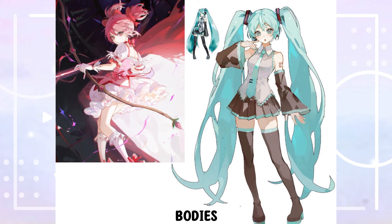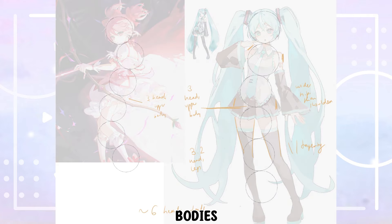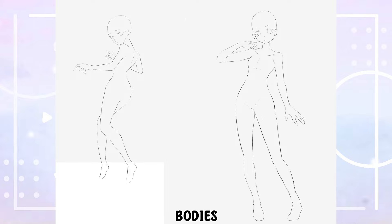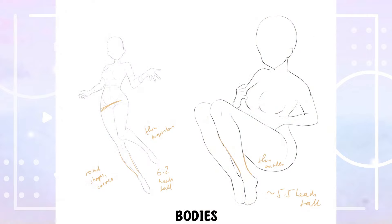Moving on to the bodies and proportions. The bodies for the characters she draws tend to be around six heads tall, because of this the characters appear rather young. Most characters she draws have pretty thin, cute proportions. The legs are often longer than the upper body and head. Her female characters tend to have stylized bodies with a small waist and wide hips. The legs look flowy since they are very tapered, meaning they get thin at the knees and ankles. The necks are also pretty long and thin, making the characters look more cute and elegant.